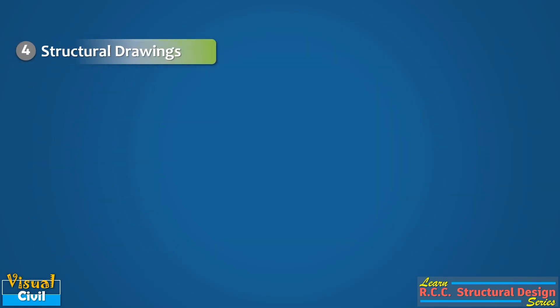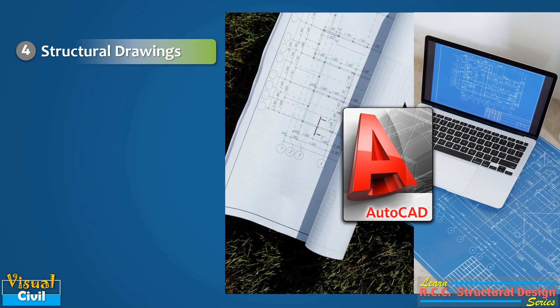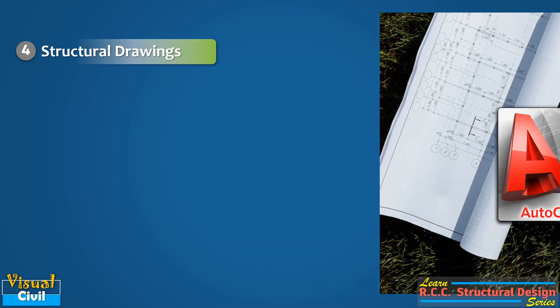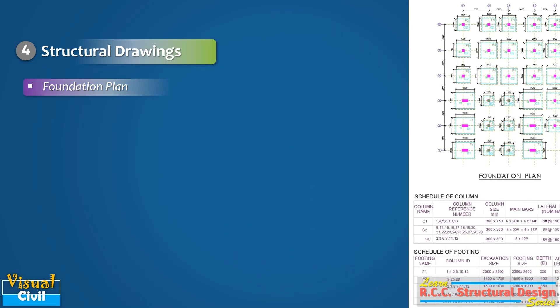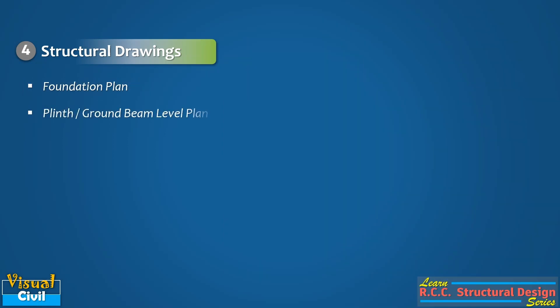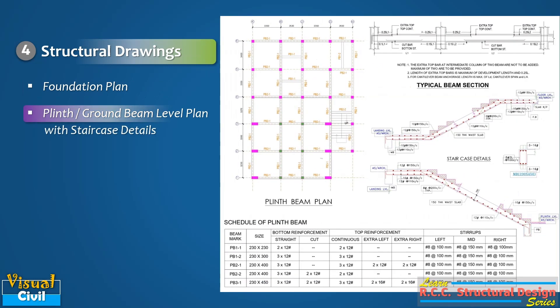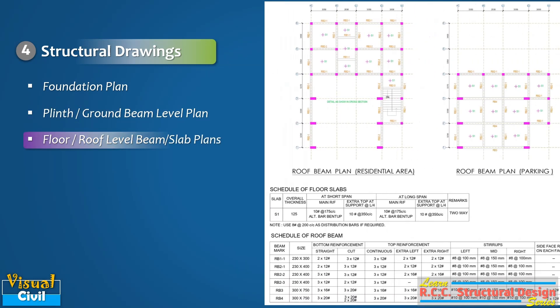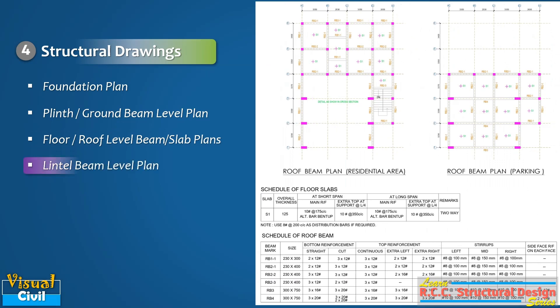Finally, in the last step, we have to develop the structural drawings. Drawings can be developed manually or using computer-aided drafting software like AutoCAD. This includes the foundation plan, plinth or ground beam plan with staircase details, floor or roof level beam plans, lintel beam level plans, and any other key item details in the drawing.